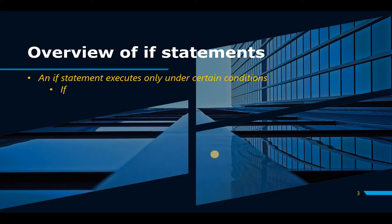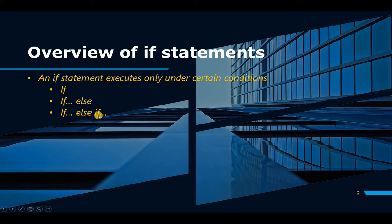You can have an if by itself — if condition A is true, do this. You can have an if-else, meaning if condition A is true, do this; otherwise, do that. You can also have a nested if — if condition A is true and condition B is true, then do this. Then you can have an if-else-if: if condition A is true, do this; otherwise, verify condition B — if it's true, do that; otherwise, do whatever is left.